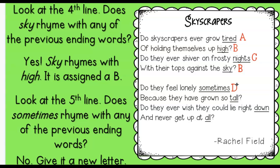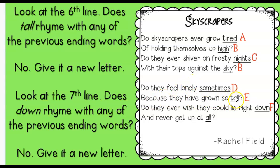It's a new letter, D. Now we're going to look at the next one: tall. Does tall rhyme with tired? Nope. Tall with high? Nope. Tall with nights? Nope. Tall with sky? Nope. Tall with sometimes? Nope. It's got its own letter, E. So far we have A, B, C, D, and E. Let's look at the next line: down. Does down rhyme with tired? No. High? Nope. Nights? Nope. Sky? Nope. Sometimes? Nope. Tall? Nope. Because it doesn't rhyme with anything yet, we go with the next letter, F.